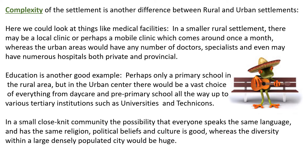The complexity of a settlement is another difference. For example, things like medical facilities — in small rural environments, maybe you're just going to have a mobile clinic once a month. Whereas in an urban area, you could have any choice of doctors, GPs, through to specialists, as well as different facilities.